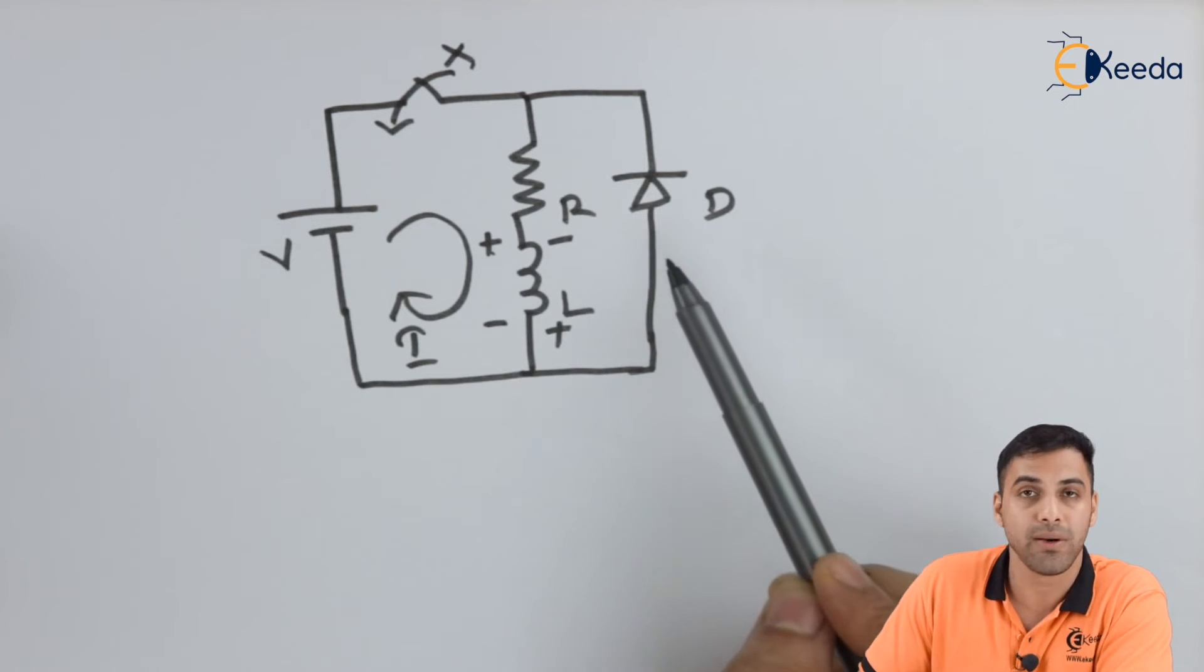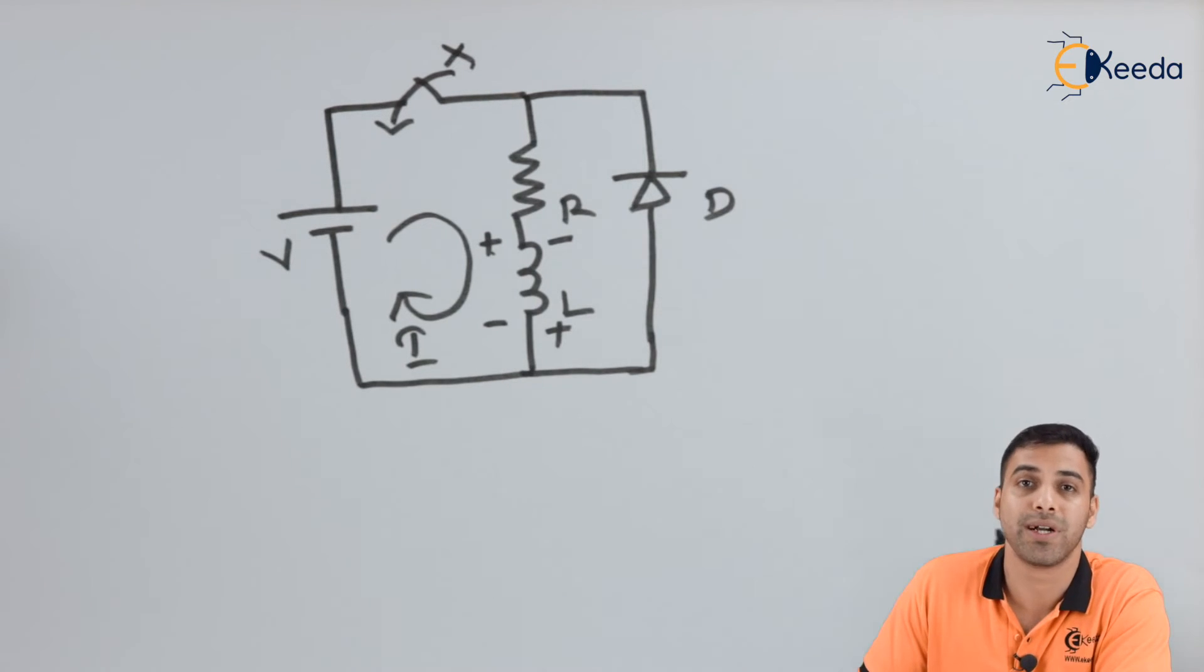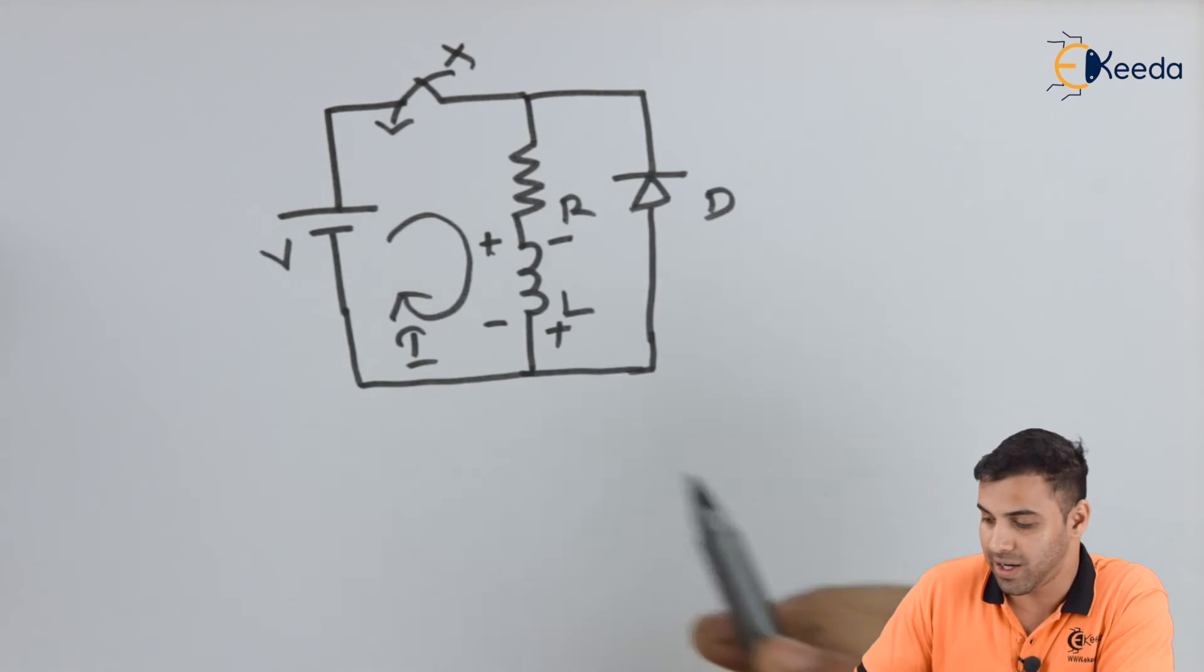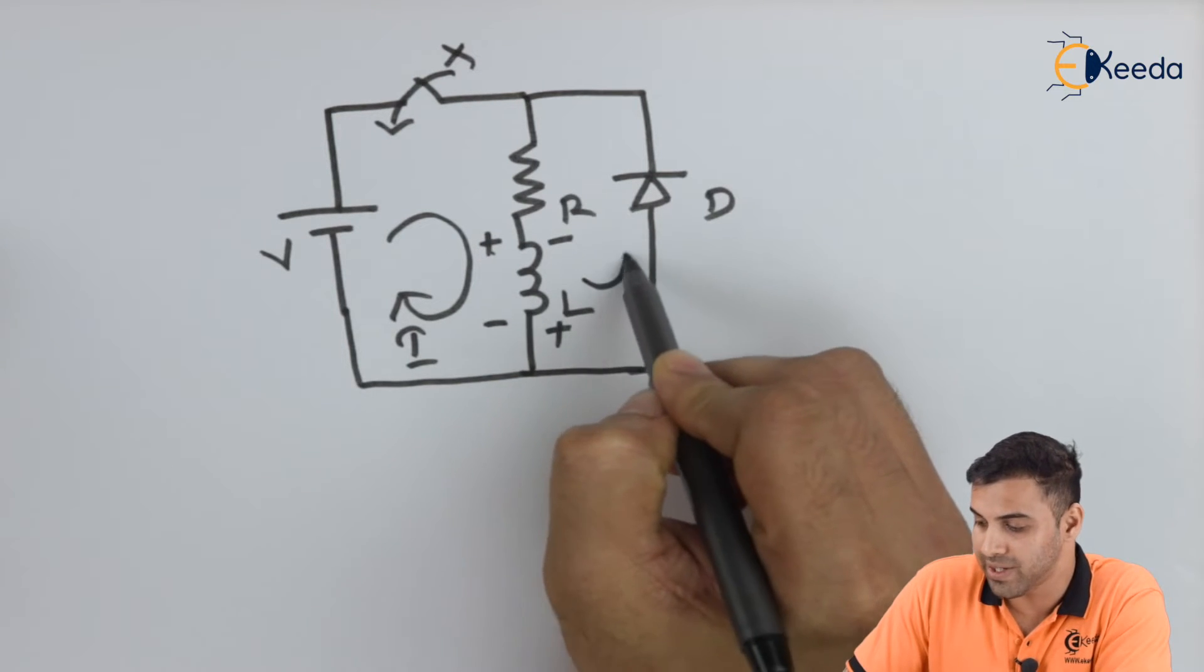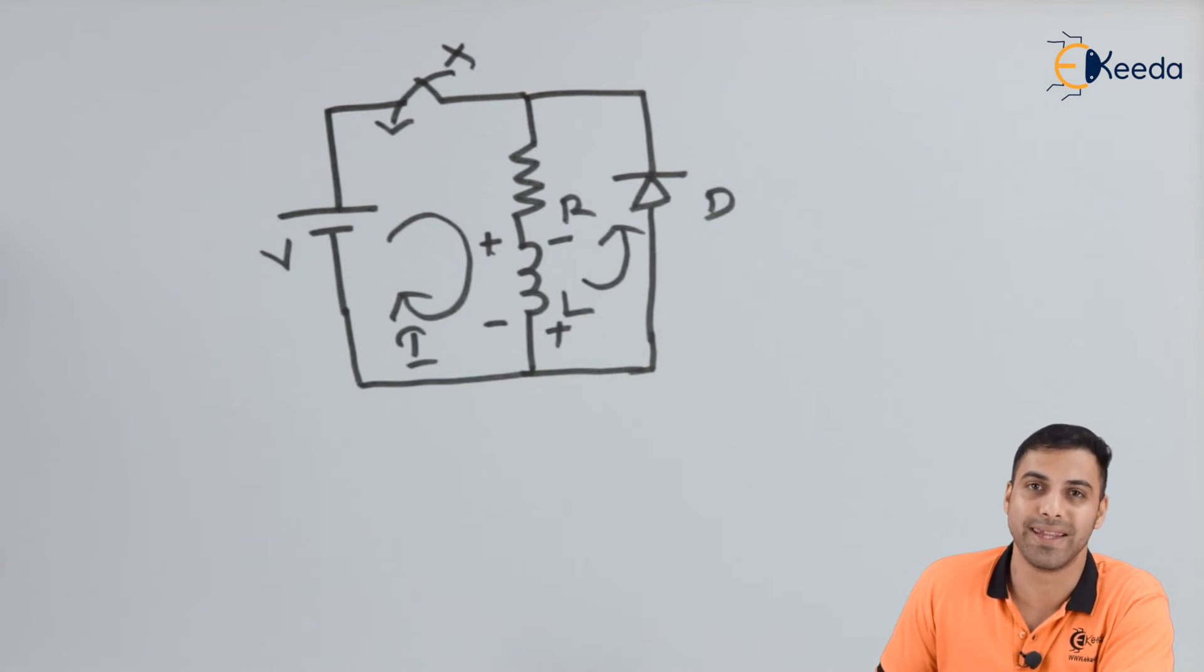And this diode provides a path for the discharging of inductor current. Now the current across the inductor will be discharging in this direction.